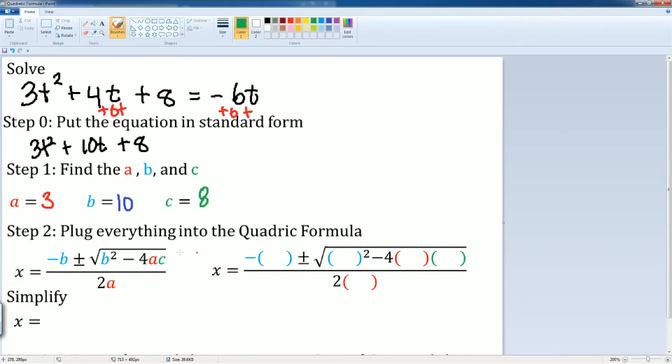I'm now going to put this into the quadratic formula. It's going to be negative 10 plus and minus radical 10 squared minus 4 times 3 times 8 all over 2 times 3.